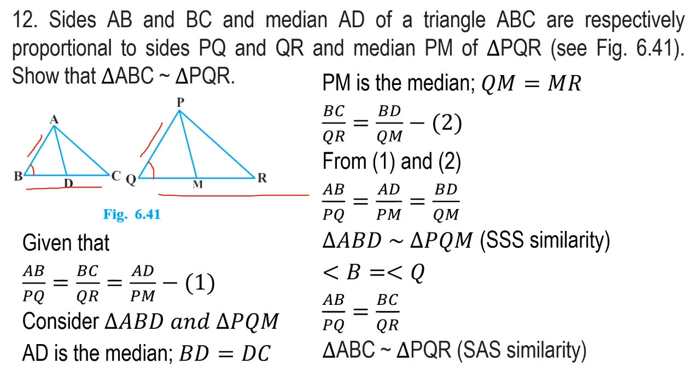By SAS similarity - two side ratios are equal and the included angle is equal - triangle ABC and triangle PQR are similar.